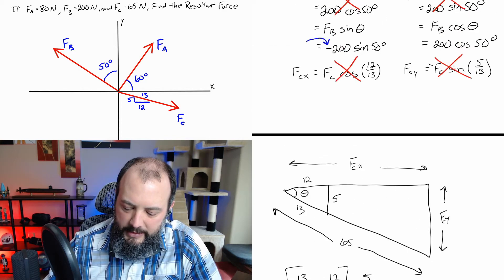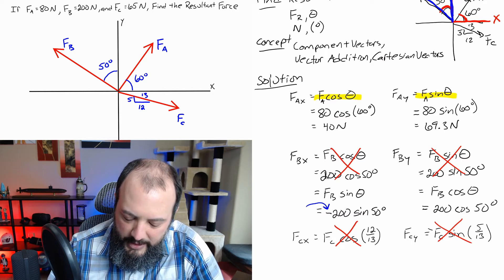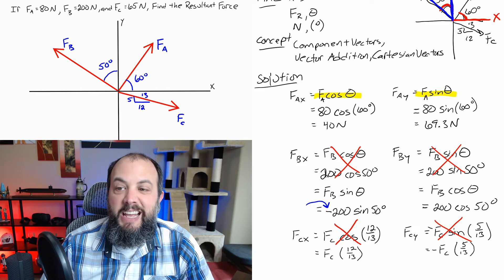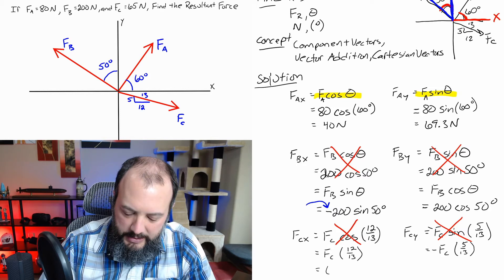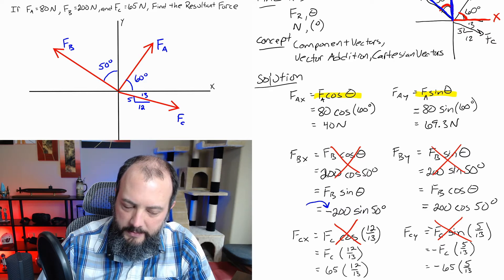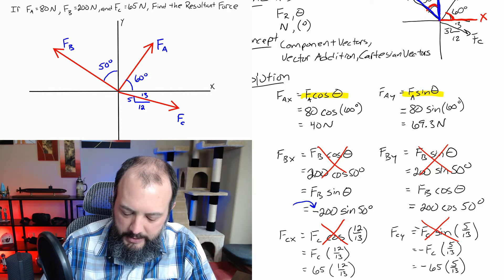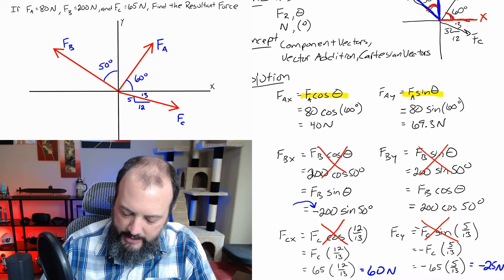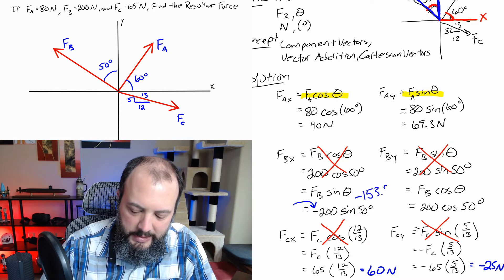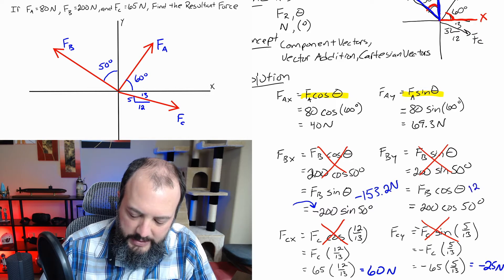The correct solution for force C: F_Cx = F_C × (12/13), and in the y direction, F_Cy = negative F_C × (5/13) — using similar triangles only, not sine or cosine. That gives 65 × (12/13) = 60 newtons, and negative 65 × (5/13) = negative 25 newtons. Going back, the F_B values are: x direction negative 153.2 newtons, y direction 128.6 newtons.